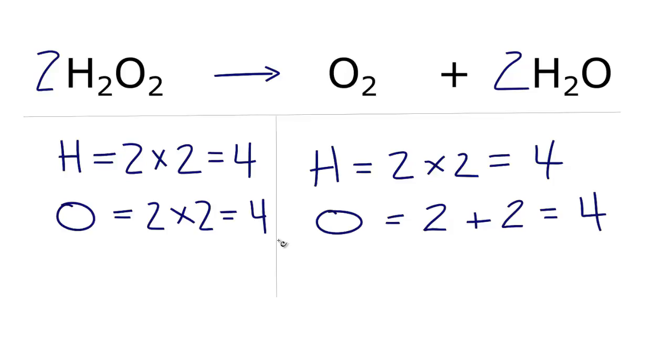The thing that catches people on this problem, this particular chemical equation, is we have the two oxygens here, but then they forget about the one oxygen here. So we need to add all these oxygens up on the product side in order to solve this chemical equation.